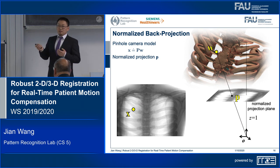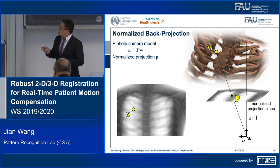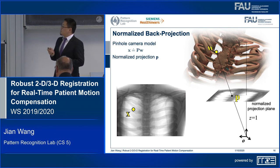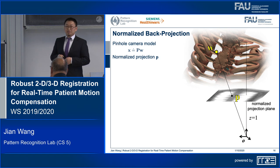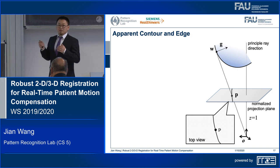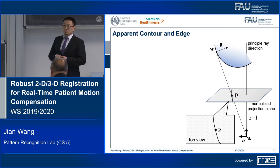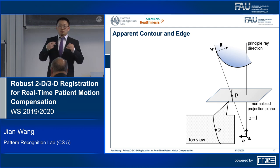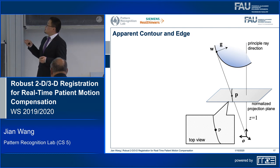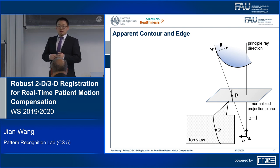To give a better understanding of the 2D-3D relationship, I back-project the image plane as a plane into 3D space. This plane has a normalized distance to the camera origin and is perpendicular to the principal ray direction — I call this the normalized projection plane. We have the 3D point W and this normalized projection point P, both in 3D space. The 3D point W lies on the surface of the shape and has a 3D gradient perpendicular to the viewing direction. Such points are called apparent contour points because they are typically imaged as an edge or contour in the 2D X-ray image.